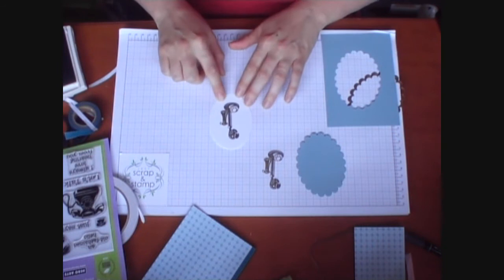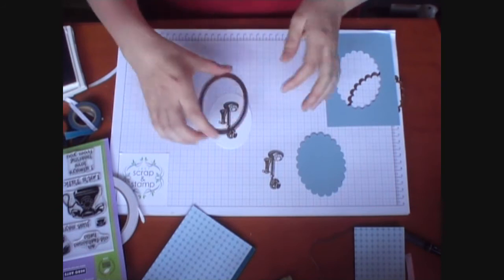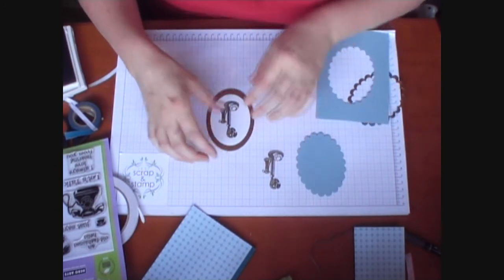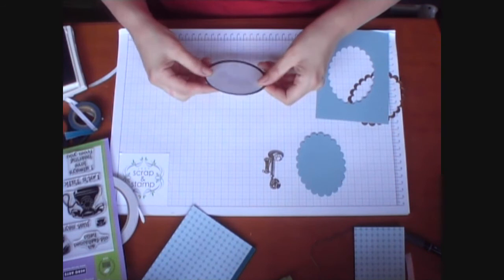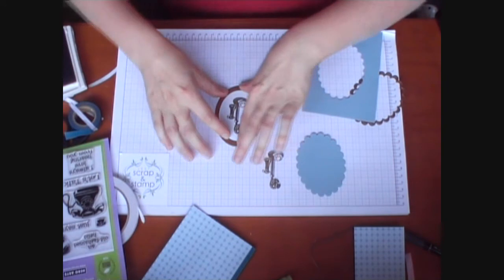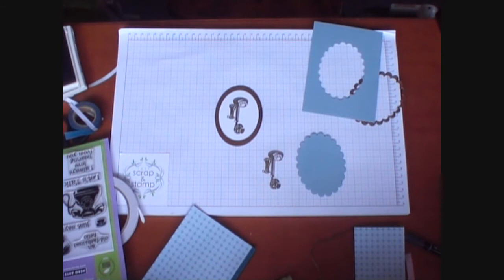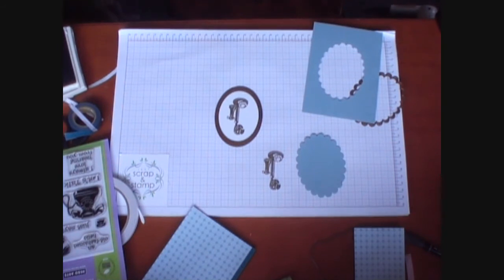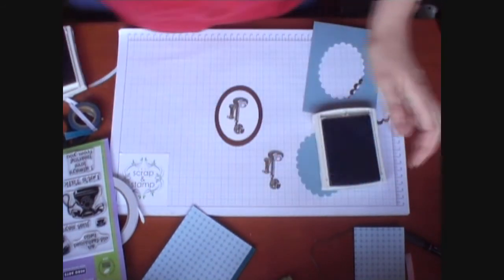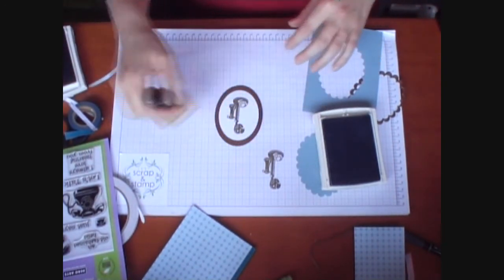Now I'm going to also do some shading on here. I'm just going to use our die and put that back on our shape. Line it up, sit that back down on there. And then just bear with me while I find the right colour ink and an ink blending tool. So I like to use the Tim Holtz tools with the foam. They're nice and easy to use.